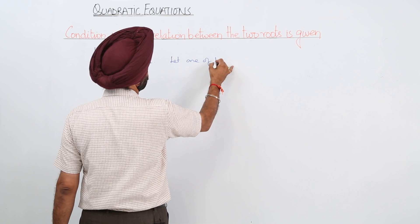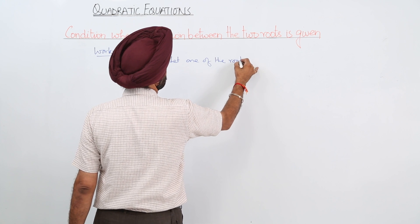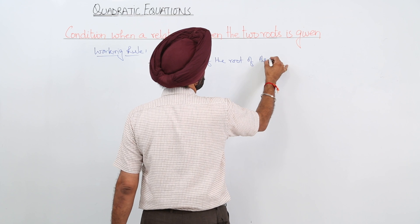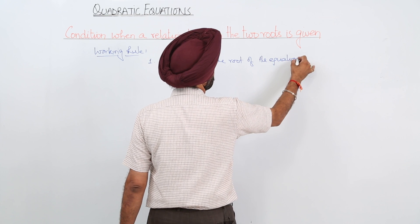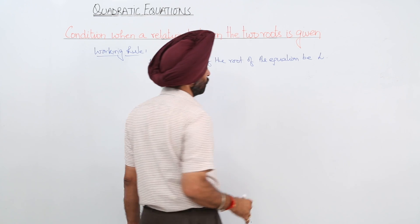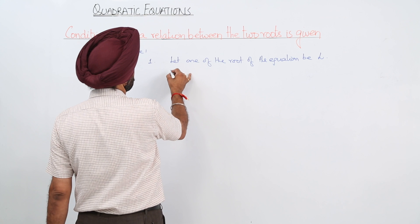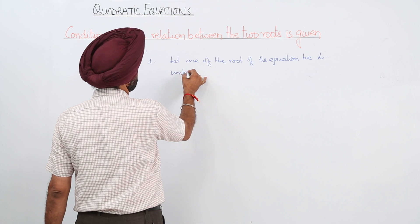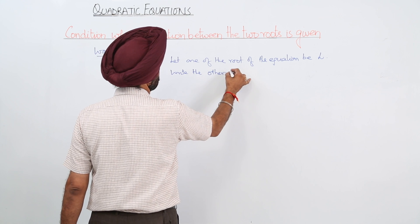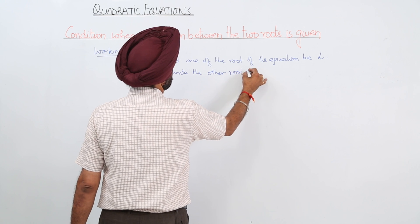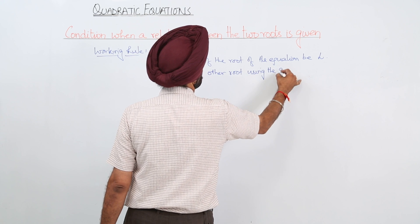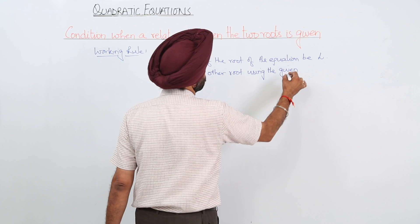Let one of the roots of the equation be alpha. Write the other root using the given condition, whatever the condition is given.